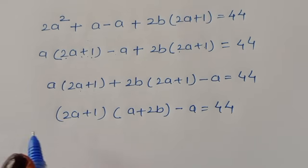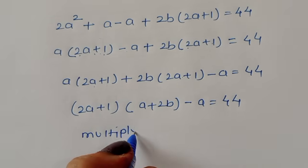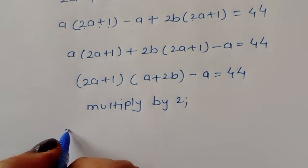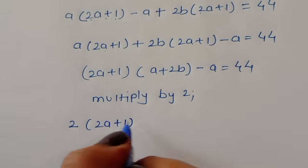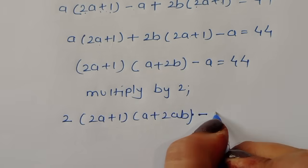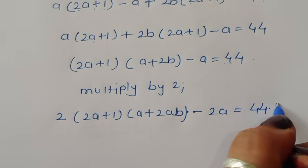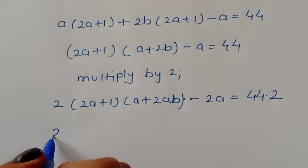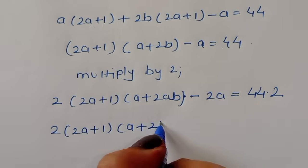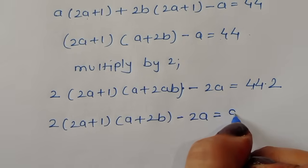Now we multiply both sides by 2: 2(2a + 1)(a + 2b) − 2a = 88.